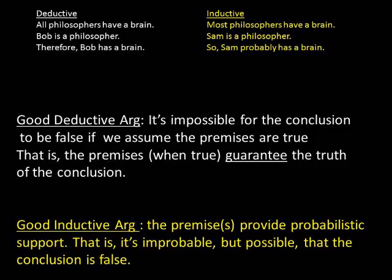Argument one is deductive because the conclusion must follow. It's impossible for the conclusion 'Bob has a brain' to be false if the premises are assumed to be true. In argument two, it's improbable that the conclusion is false if we assume the premises are true — it's possible but unlikely that Sam doesn't have a brain in the inductive argument.